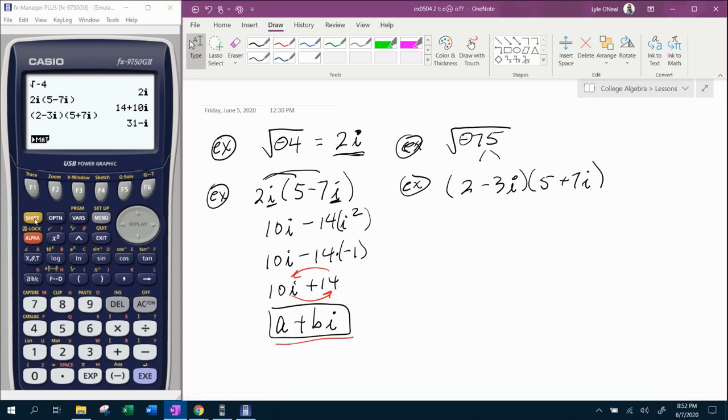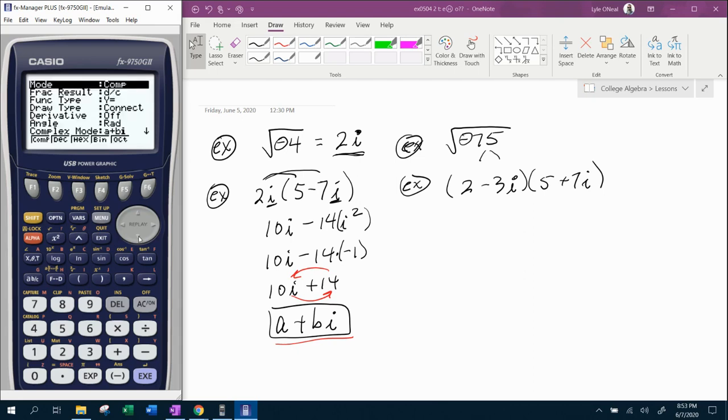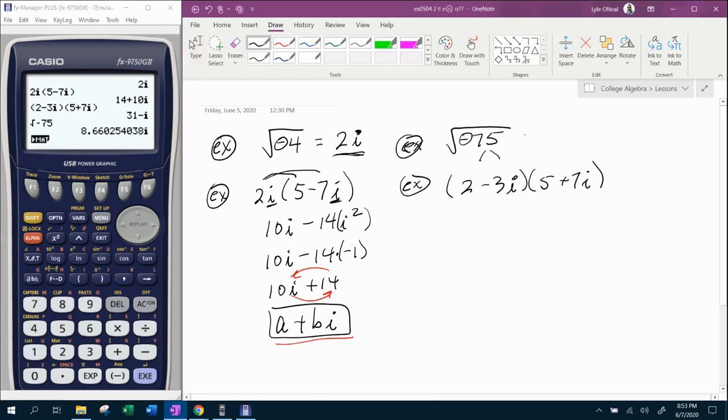And again, the calculator makes this super easy. If we do shift square root, negative 75, and the calculator is going to, oops, my bad dog, the calculator is not going to give it in radical form. I'm so sorry. This particular calculator is not going to be able to display this in simplest radical form. Let me show you what I'm talking about.